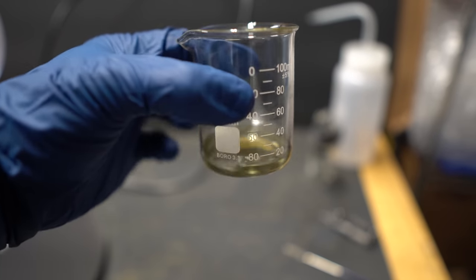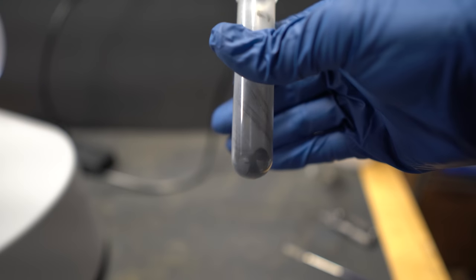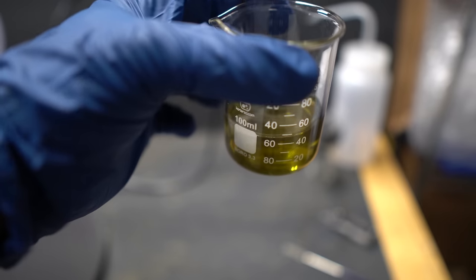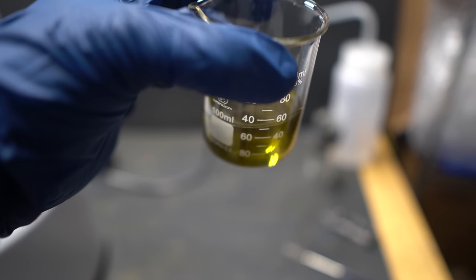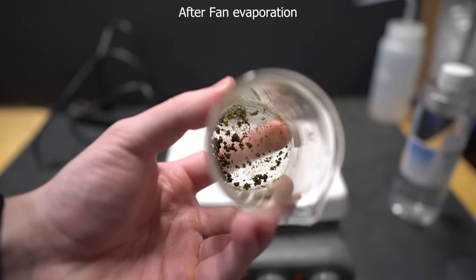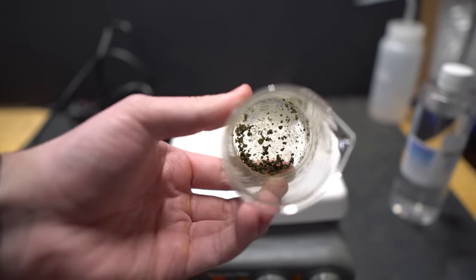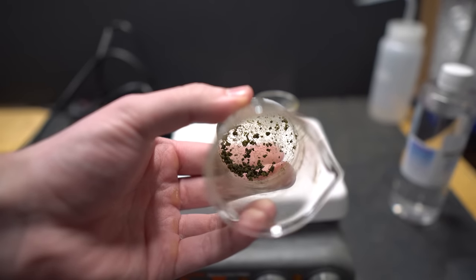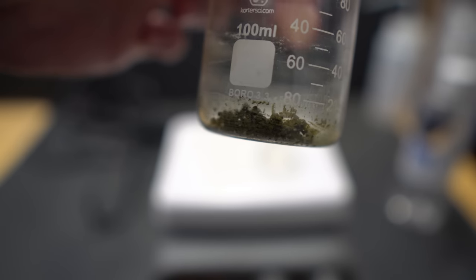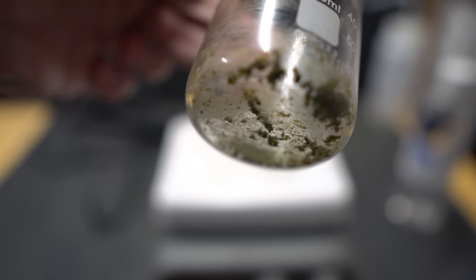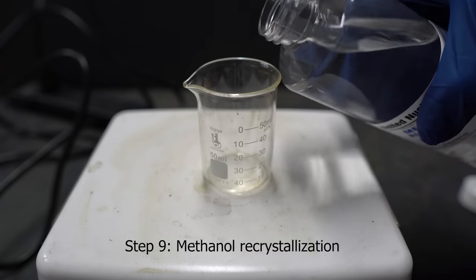When I poured out the acetone, luckily none of the charcoal decided to get up and stir around. You can see that our solution is a lot more clear now. It's important to let it run as long as possible as the solution does look clear right here, but there's actually a tiny amount of charcoal still in the solution. I then decided to do a fan evaporation so we can get our crude product and then perform a recrystallization.